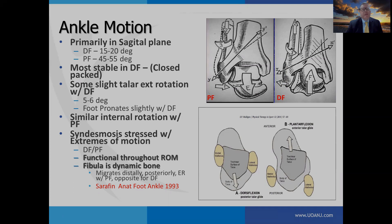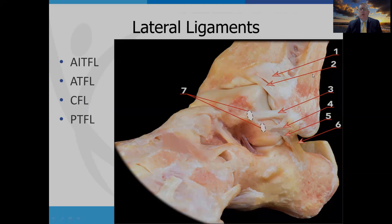Ankle motion primarily occurs within the sagittal plane. The ankle is most stable when it's in dorsiflexion or the closed-packed position, where bony stability provides the support. The syndesmosis is stressed throughout the entire range of motion, but mainly stressed at the extreme ranges of dorsi and plantar flexion. Keep in mind the fibula migrates distally, posteriorly, and externally rotates to hug the lateral talus with plantar flexion, and moves in the reverse direction with dorsiflexion.